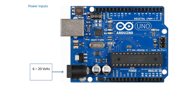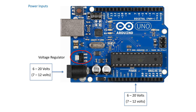Let's start with the power jack, shown here on the left, and the VIN pin, shown here at the bottom of the board. Both these inputs can accept between 6 to 20 volts. But if the Arduino runs on 5 volts, how is this possible? That's thanks to this little voltage regulator shown here. The voltage regulator can take this range of higher voltages and bring them down to a nice steady 5 volts, which is what the Arduino is designed for. However, it's recommended that when using these power inputs, you restrict the input between 7 and 12 volts.